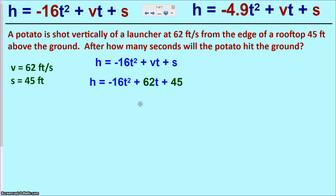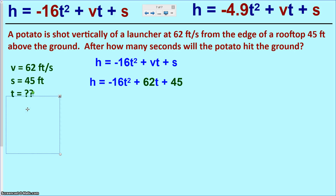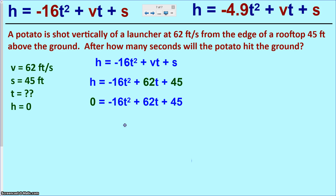With V and S plugged in, there are no more numbers to find — the rest is interpretation. The key hint is in the question: after how many seconds will the potato hit the ground? The ground is at zero feet, so h equals zero. We're solving for t. Plugging zero in for h gives us a trinomial equal to zero.